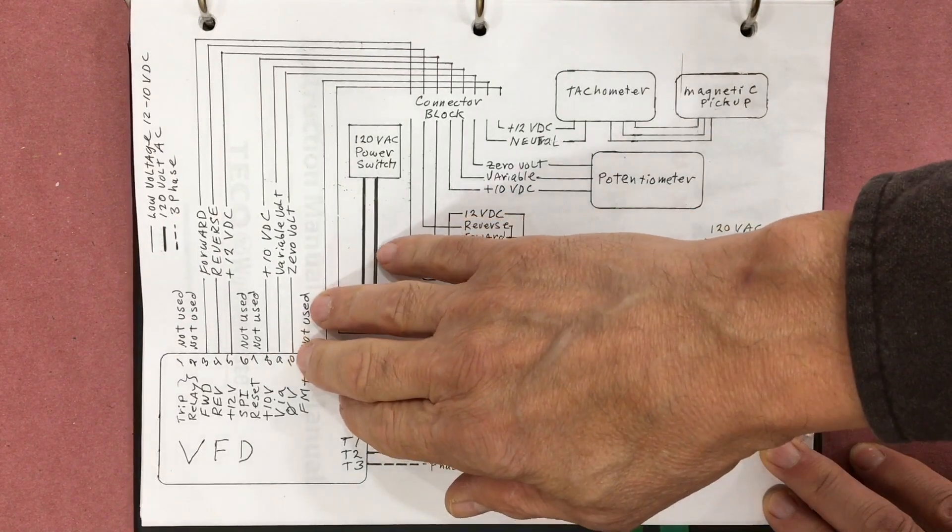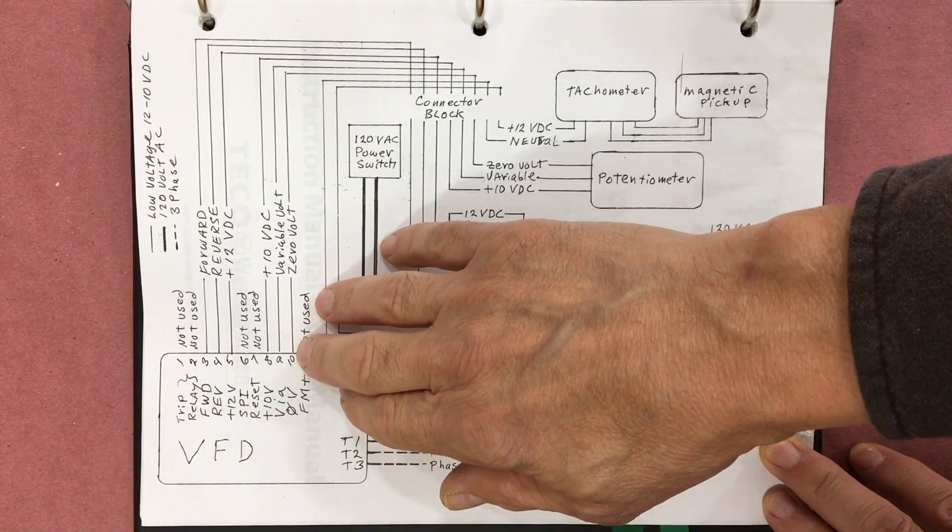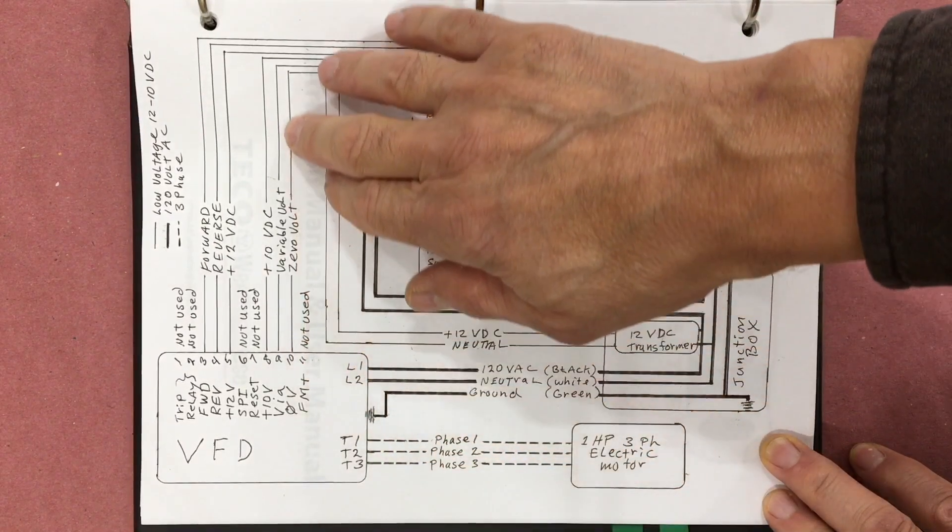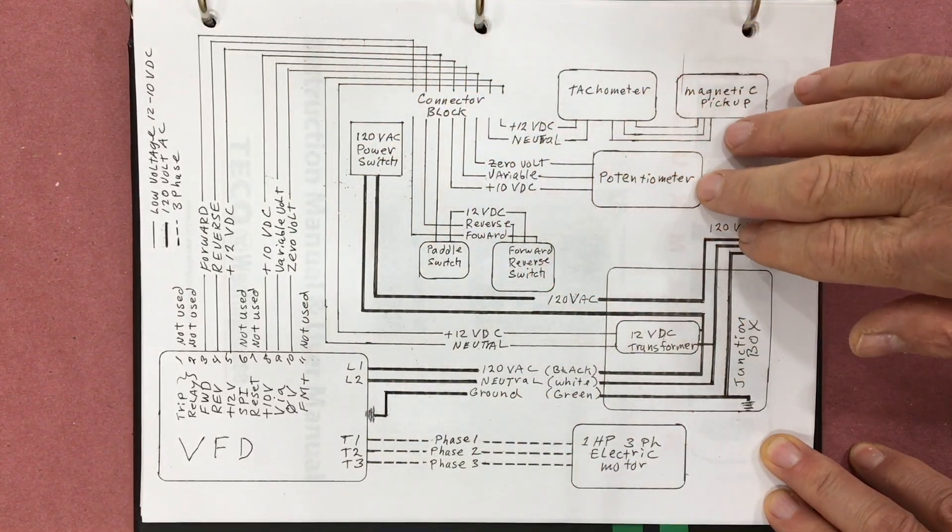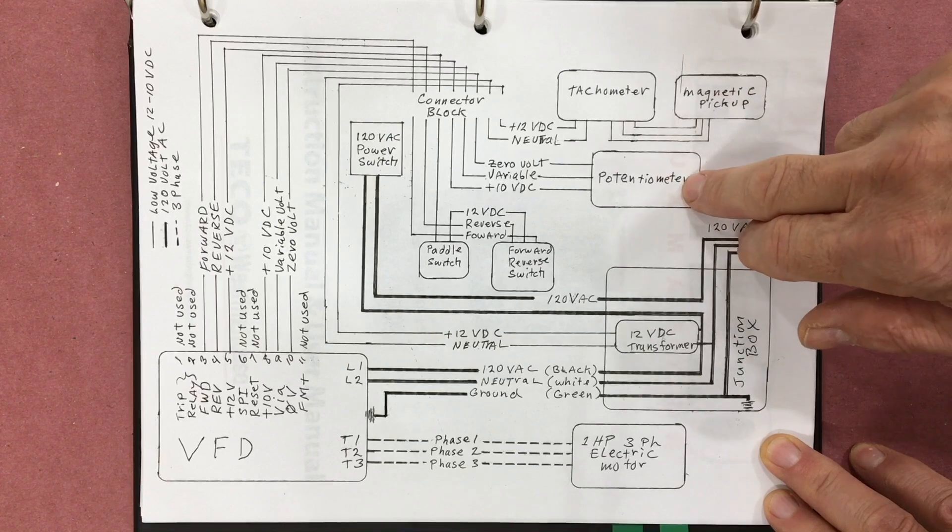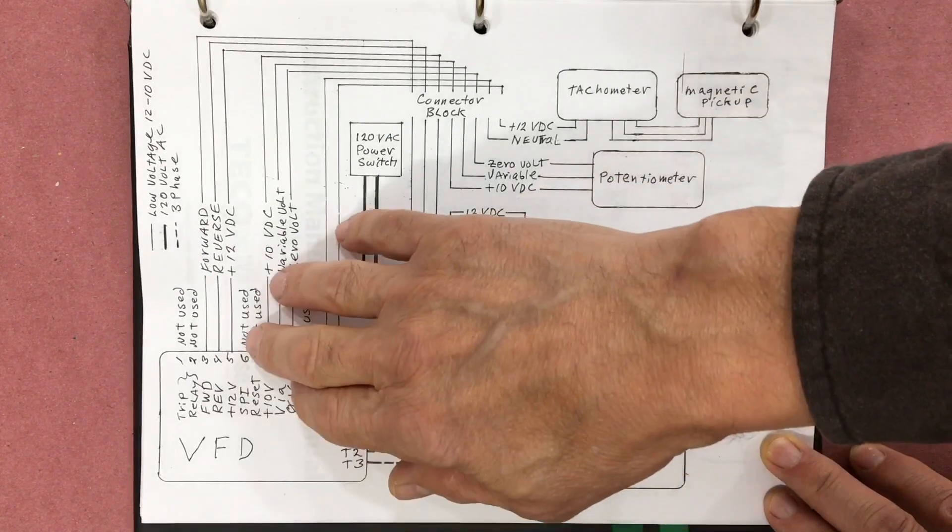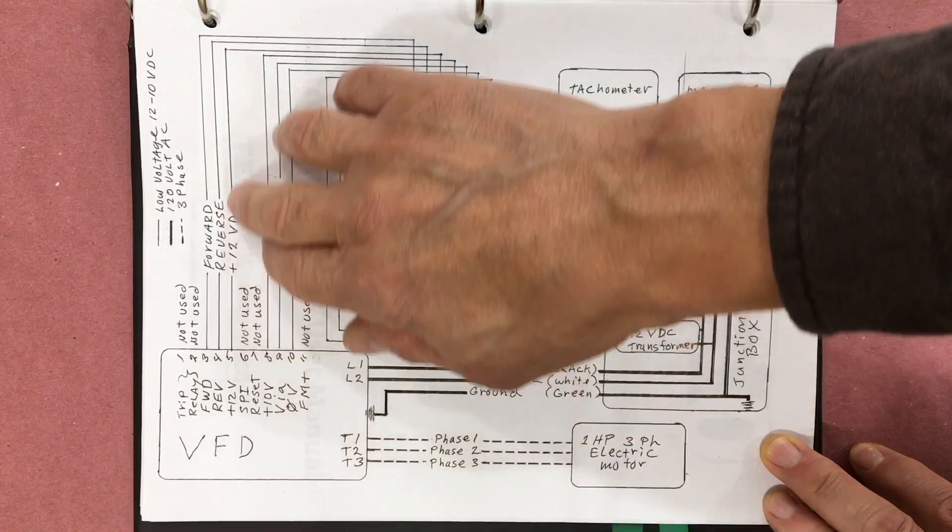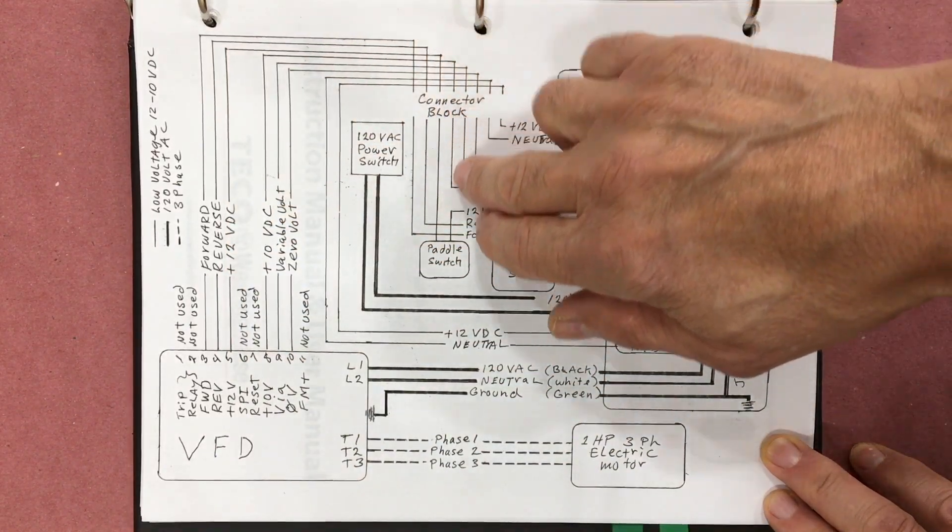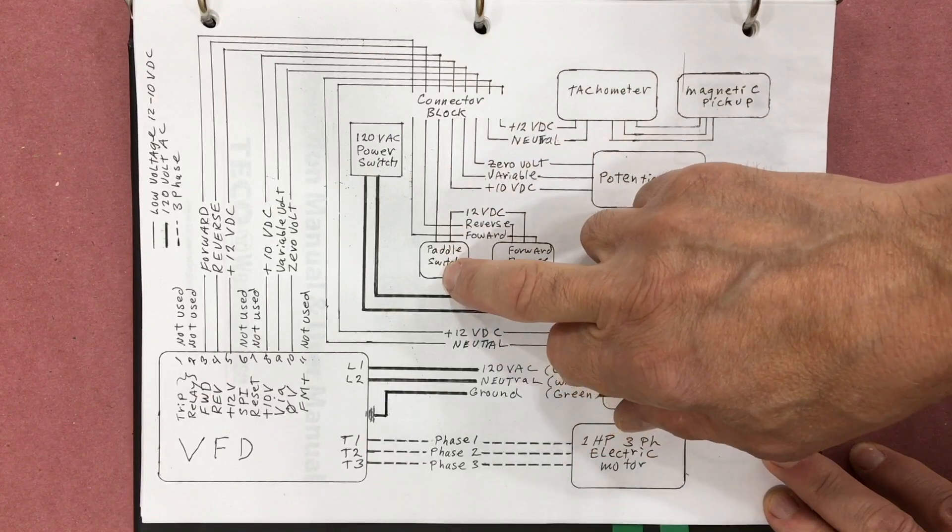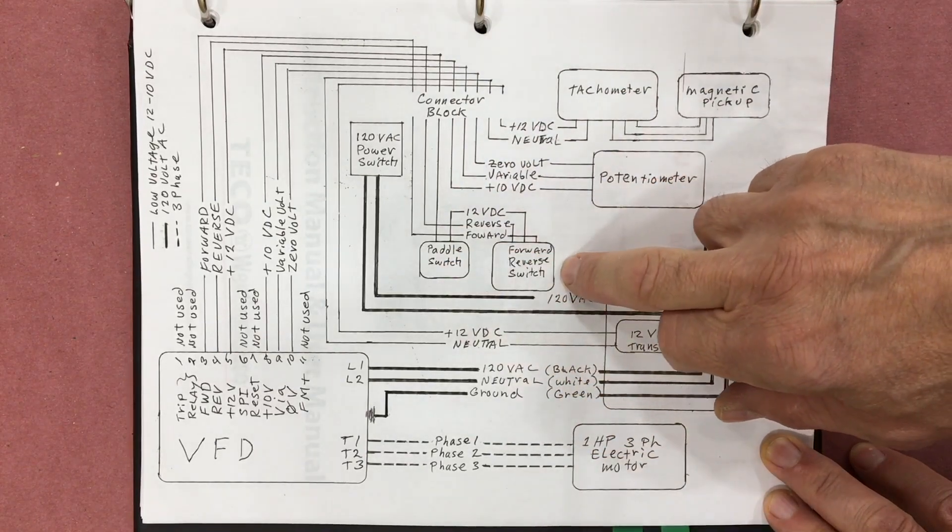There is a 10 volt circuit that comes from the VFD and it goes to the potentiometer that controls the frequency output for the VFD. And finally there is a 12 volt circuit that comes from the VFD, flows through the on-off paddle switch, and then to the forward-reverse switch.